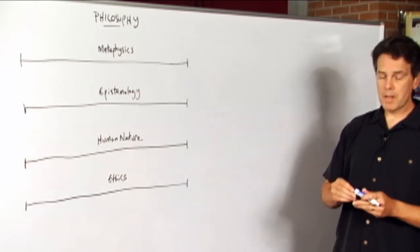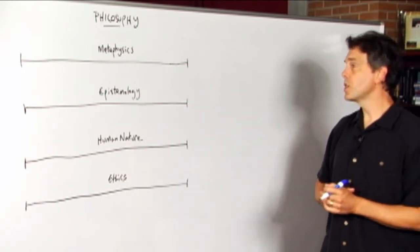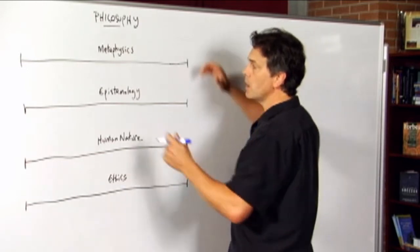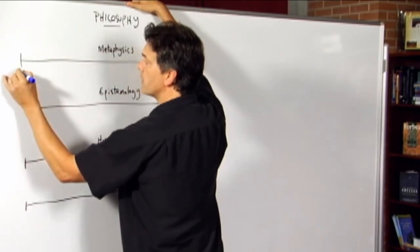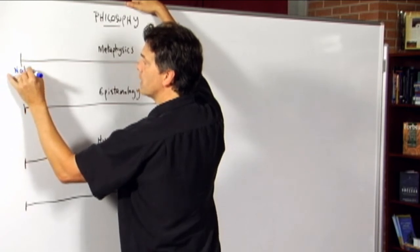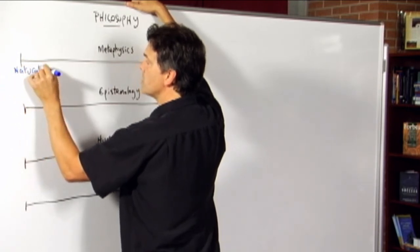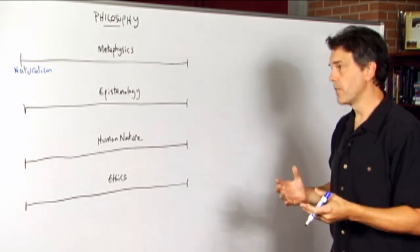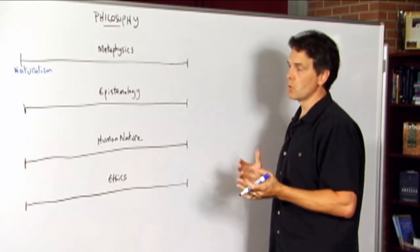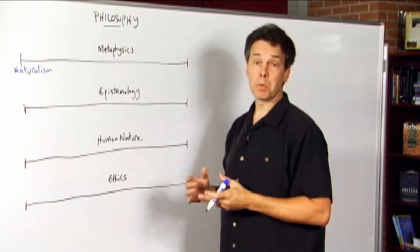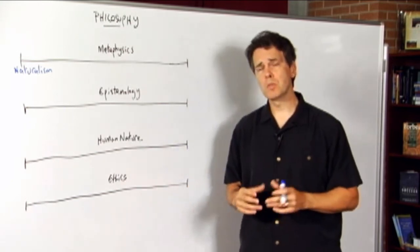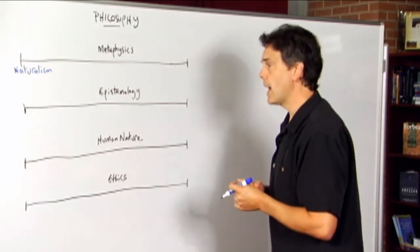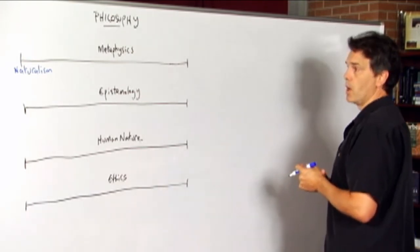When we did the issue in metaphysics, the issue that we focused on was the big divide in the history of philosophy between those who approach metaphysics naturalistically. That is to say they see the universe as a self-contained, self-governing system, the natural world, and that we can explain in principle the way the world works without reference to God or the gods or any sort of a higher supernatural realm.